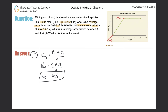Instantaneous velocity at t equals 5 seconds. You might say to yourself: I have to find the slope, because in other problems I've had to calculate the slope when talking about instantaneous velocities. But not in this problem. You have to always consider what graph you're being given. In this particular graph, we're considering velocity versus time.